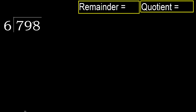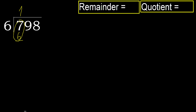798 divided by 6. 7 is not less, therefore with 7: 6 multiplied by which number is nearest to 7 but not greater? 6 multiplied by 1 equals 6, which is not greater. Subtract: 7 minus 6 is 1.